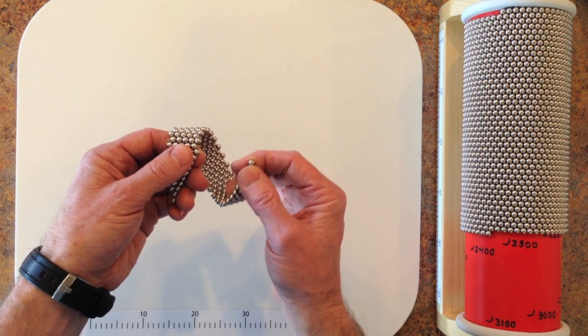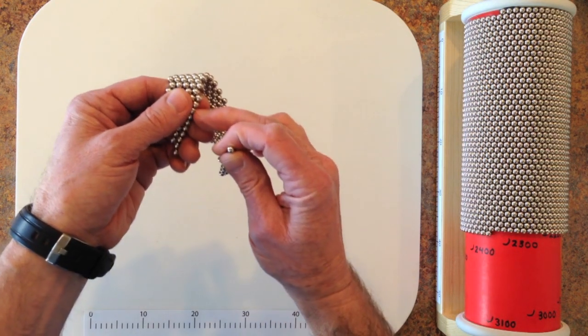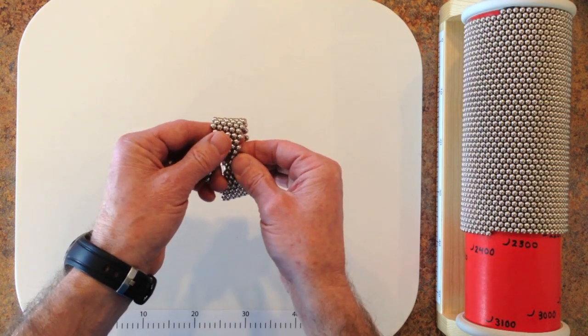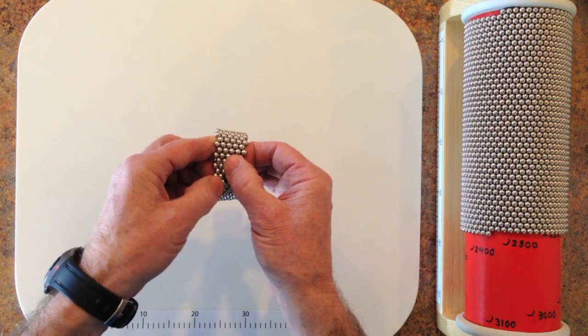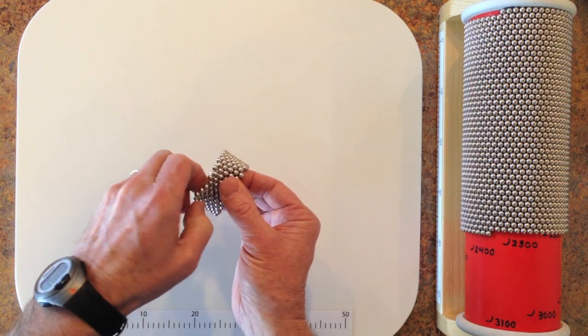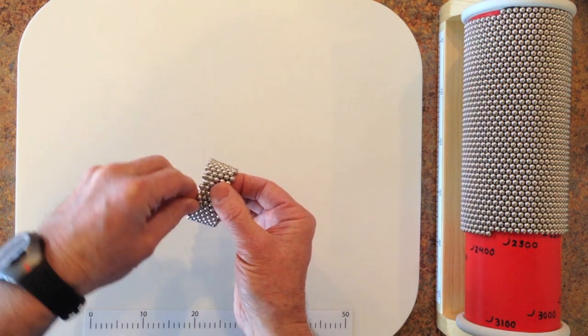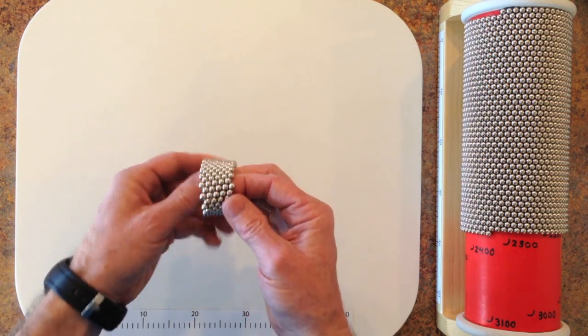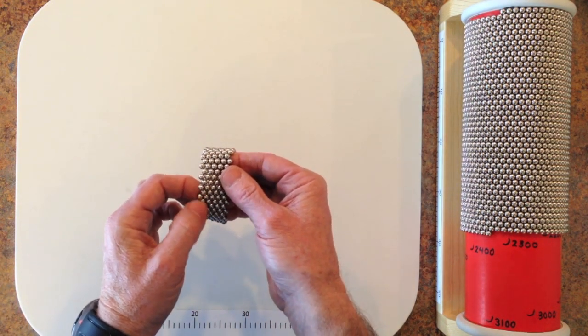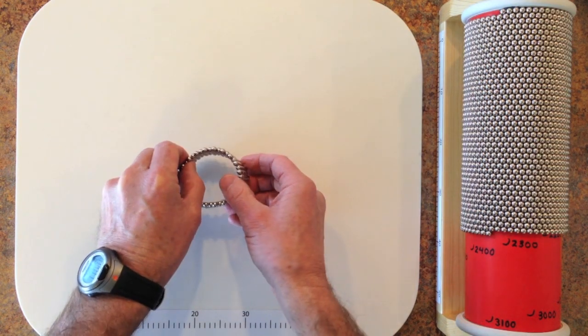So I'm going to put this end magnet right there. Okay, so that is the inner wall of the tube.